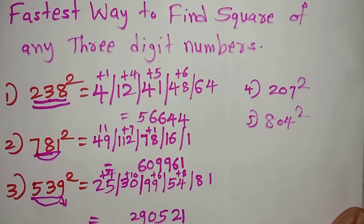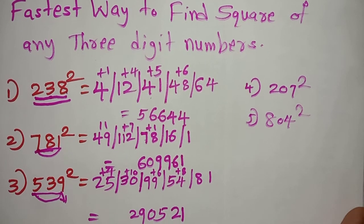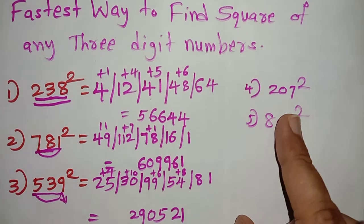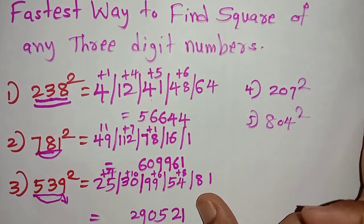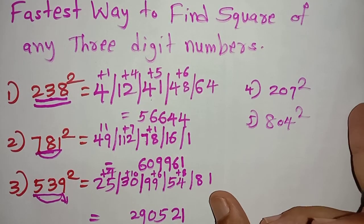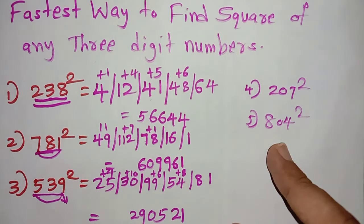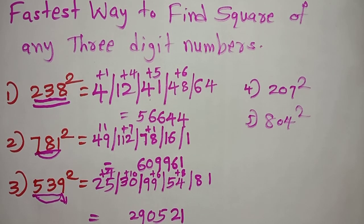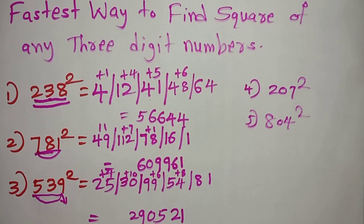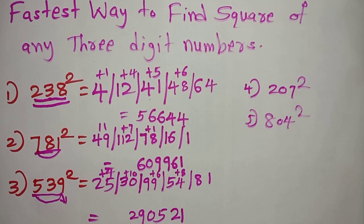Students, this is how to find the square of a 3 digit number. I hope you all understood. In the next video I will explain the numbers with a middle zero — that is a different way. If this was interesting and helpful, just hit the like button and subscribe to my channel. Thank you!